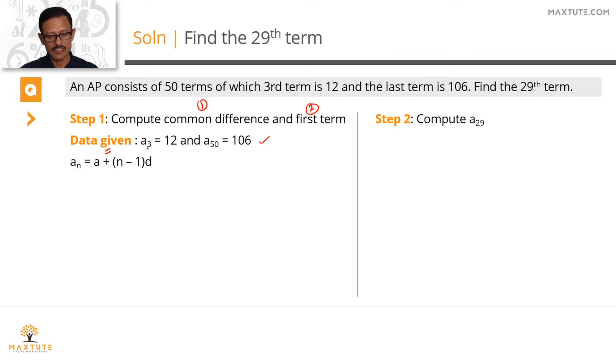I'm going to express both a50 and a3 in this format. So a50 will be equal to the first term A plus n minus 1, which is 50 minus 1, 49 times the common difference, equals 106. The question says the 50th term is 106. We'll run through the same exercise for the third term. So a3 equals the first term plus n minus 1, which is 3 minus 1, 2D equals 12.